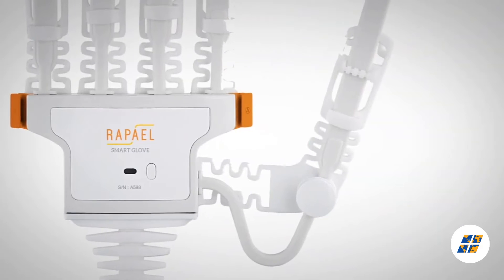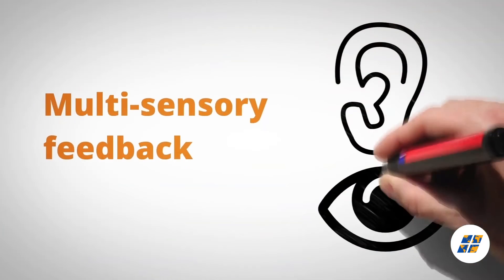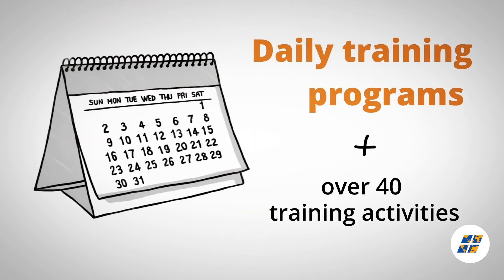The Raphael Smart Glove offers five key ways to help improve your movement: multi-sensory feedback which allows you to learn more quickly, and daily training programs including over 40 training activities, making repetitive training engaging.